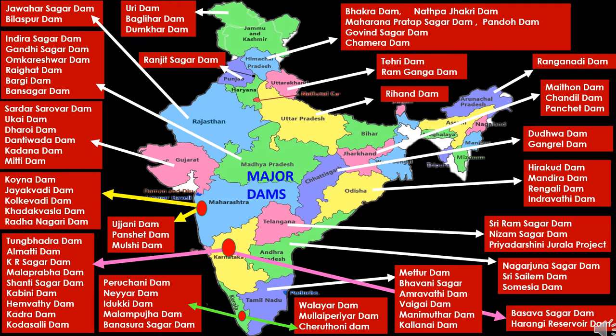In Himachal Pradesh, the first dam is Bhakra Dam, the third largest dam in India, built on the Sutlej River in Bilaspur. Second is Nathpa Jhakri Dam, constructed on the Sutlej River in Shimla. Third is Maharana Pratap Sagar Dam, also known as Pong Dam, on the Beas River in Kangra district. Fourth is Pandoh Dam on the Beas River in Mandi district. Fifth is Gobind Sagar Dam on the Sutlej River in Bilaspur. And next is Chamera Dam, built on the Ravi River in Chamba district.